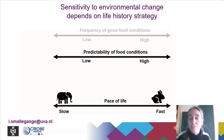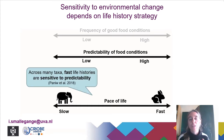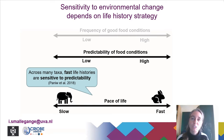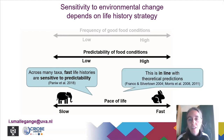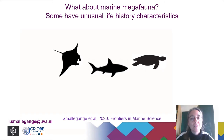We know from recent work that whether a species or population is characterized by a fast or slow life history can be related to how these populations respond to shifts in the predictability of environmental conditions. For example, a cross-taxonomical study has shown across a wide range of animal and plant species that fast life histories are very sensitive to shifts in the predictability of environmental conditions, and this has also been corroborated by theoretical findings. In this study we asked: what about marine megafauna — do they follow this same premise?